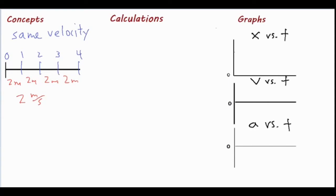If we're talking about constant velocity, the acceleration is always zero meters per second squared, which means you're adding zero meters per second every second, keeping that velocity exactly the same.